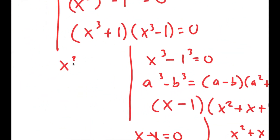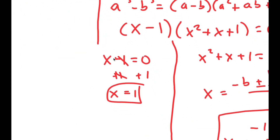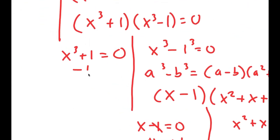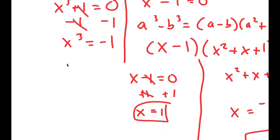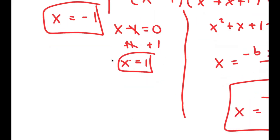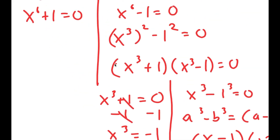Now we also have to solve x to the power of 3 plus 1 equals 0. I'm going to subtract 1 on both sides, so I get x to the power of 3 is equal to negative 1, meaning x is also equal to negative 1. So this is another solution.